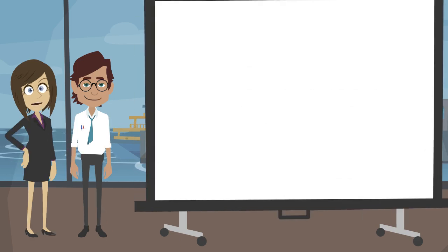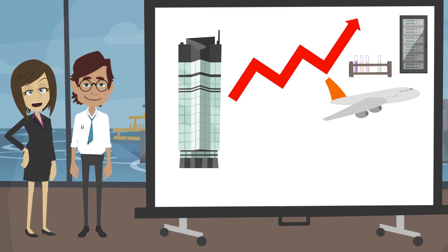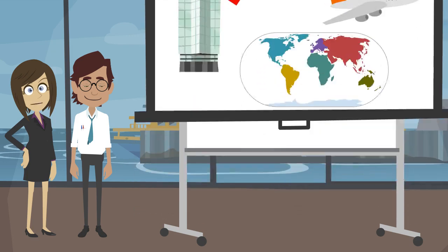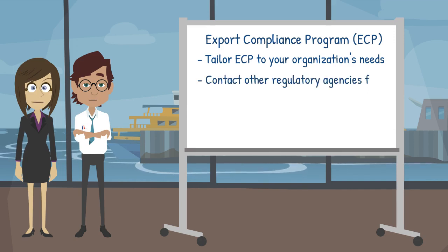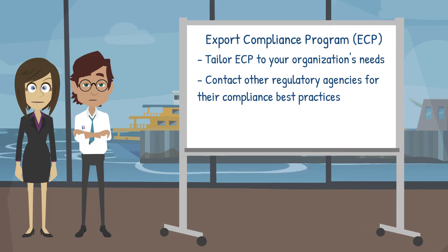Some factors to consider include the size of the company, the number or volume of exports, the types of items to be exported or re-exported, the end-use or the end-user, and the geographic location of your customers. These elements were developed specifically for compliance with the EAR. If your company exports items or services that fall under the jurisdiction of other agencies — for example, the Department of Treasury or the State Department — you'll need to ensure that your ECP reflects consideration of those regulations.